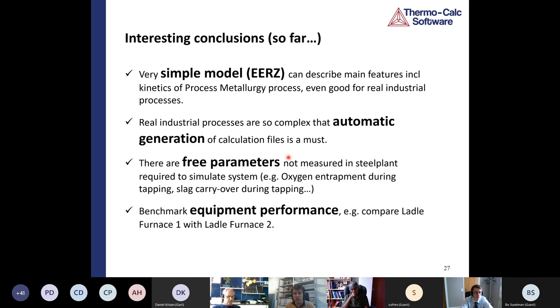The other thing is free parameters. There are things happening in steel plants that nobody's measuring, which is oxygen entrainment and slag carryover. And these are required, otherwise you don't understand your results, you can't interpret them. The final thing is the equipment performance. If you have a simulation like this, you can really one-to-one compare. If you have, for example, two ladle furnaces, you can compare one-to-one how they're performing, one compared to the other. One might be from supplier one, the other might be from a different supplier, and you can really immediately see what the difference is because you've got so much data and so much measurement, how well your equipment is performing if you benchmark it against each other.